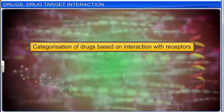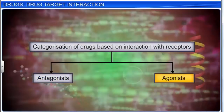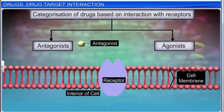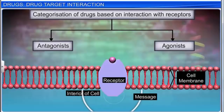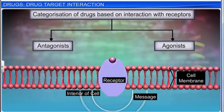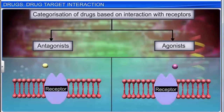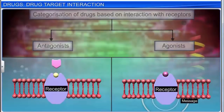Based on the interaction with receptors, drugs can be categorized into antagonists and agonists. Antagonists are drugs that bind to the active site of a receptor and inhibit its natural function — these are useful when a message is required to be blocked from reaching a cell. Agonists are drugs that behave like natural chemical messengers; they bind to receptors and activate them to produce the desired response, and are useful when there is a lack of natural chemical messengers. This is how a drug carries out a specific action targeted at one specific biochemical function within the body.